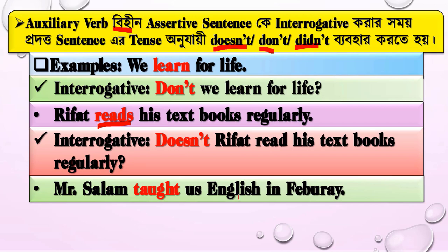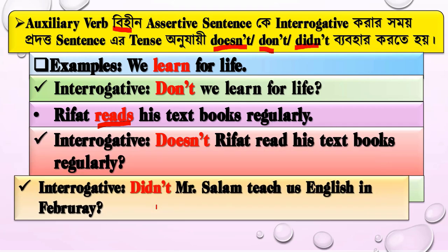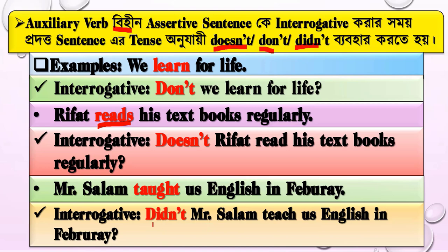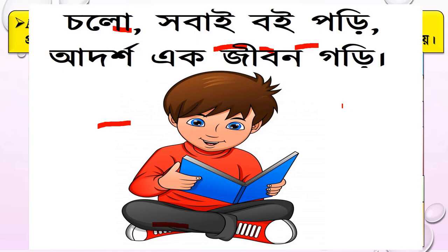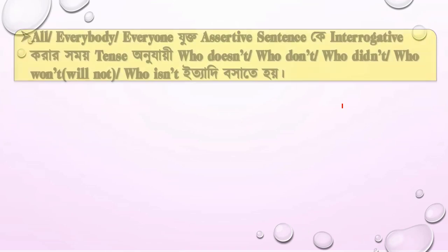Another example: 'Mr. Salaam taught us English in February.' The verb is 'taught' — past tense — so we use 'didn't.' The interrogative form becomes: 'Didn't Mr. Salaam teach us English in February?' Remember: don't, doesn't, didn't are all used depending on the tense.